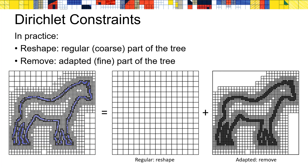In terms of implementation, it is reasonably straightforward to do the reshaping when the functions are defined over a regular grid. So in our implementation, we make the grid regular up to some predefined depth and adapt the tree to the input samples beyond that. We then reshape the basis functions at the regular levels and remove basis functions at the adapted levels.